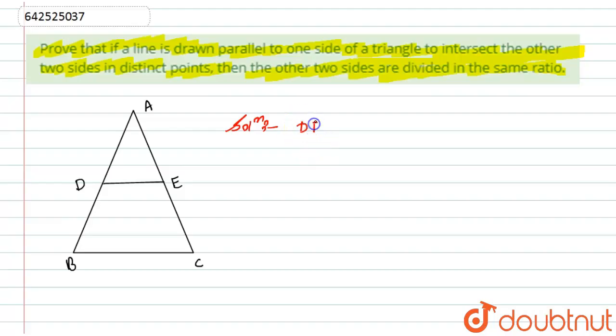First of all, what is given to us? We have given that DE is parallel to BC. Now to prove this statement, that the parallel line divides the two other sides in same ratio, we have to prove that triangles ADE and ABC are similar triangles.